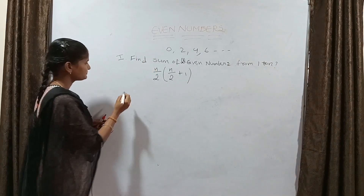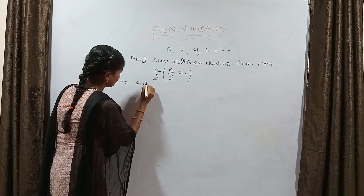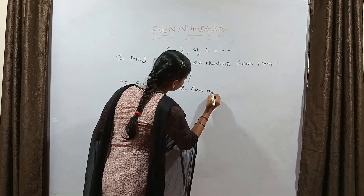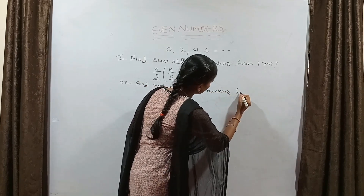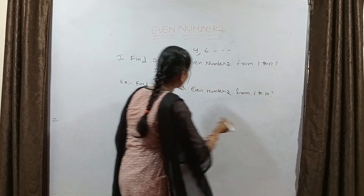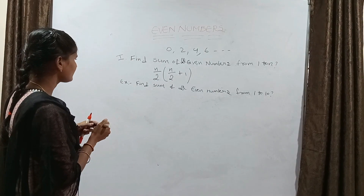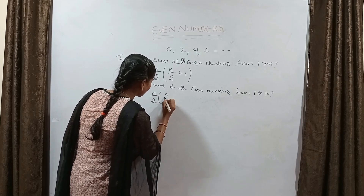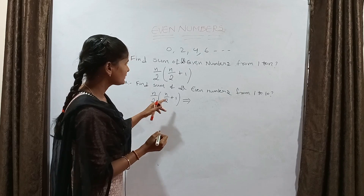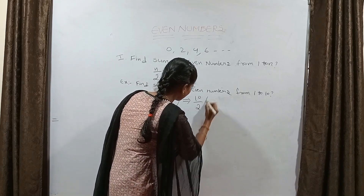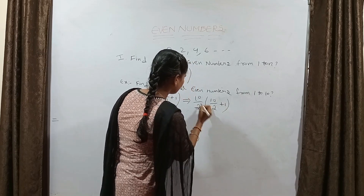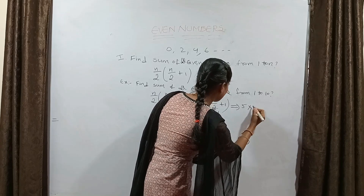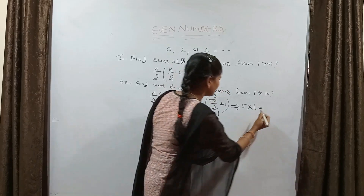I am taking one example. Find the sum of all even numbers from 1 to 10. In this question N is 10. Apply the trick: 10 by 2, multiplied by 10 by 2 plus 1 — that is 5 into 6, which equals 30.